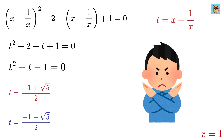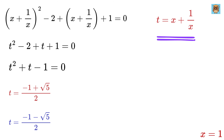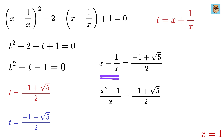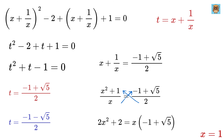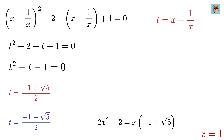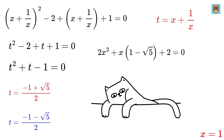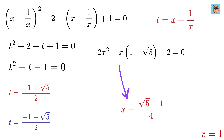We're not done yet, because we have x + 1/x = t. When t equals (minus 1 plus √5) / 2, we get x + 1/x equals that value, which becomes x² + 1 = x · (minus 1 plus √5). Rearranging gives 2x² + x(1 minus √5) + 2 equals 0. Solving this quadratic yields x equals (√5 minus 1)/4 ± i/2 · √((5 + √5)/2). Both these values of x are complex numbers.